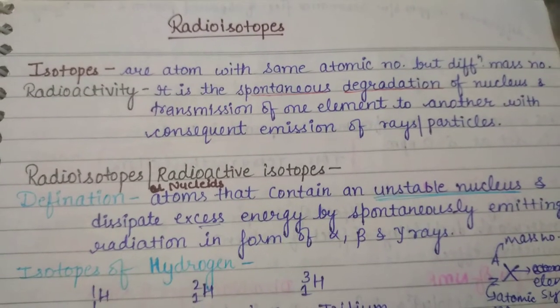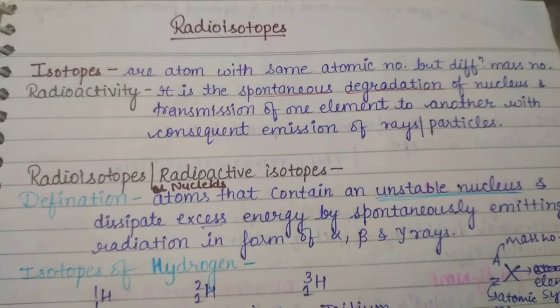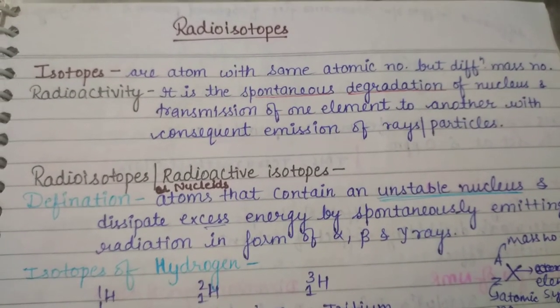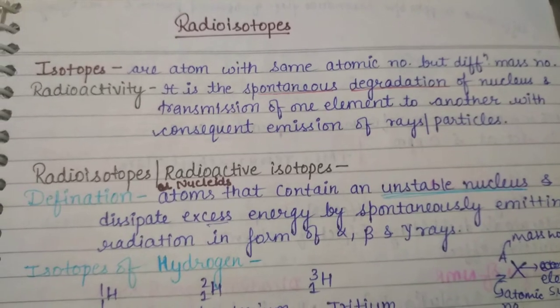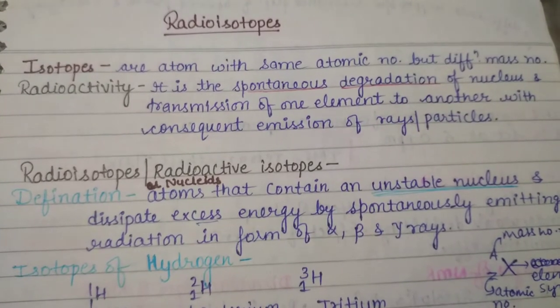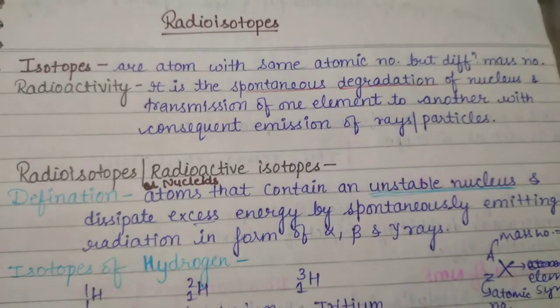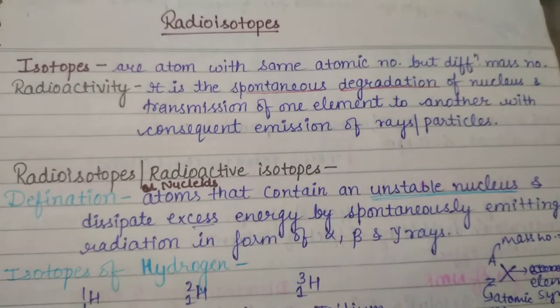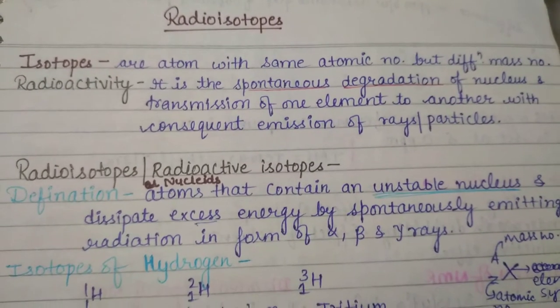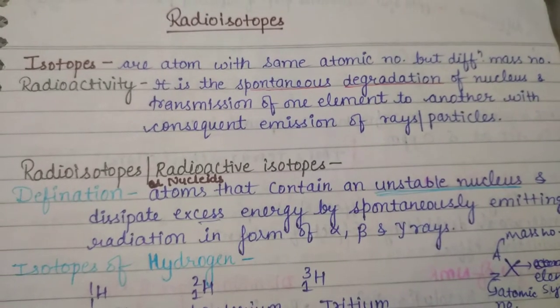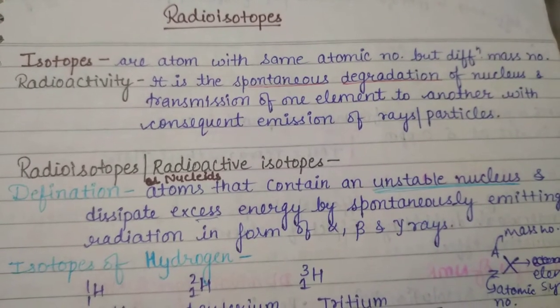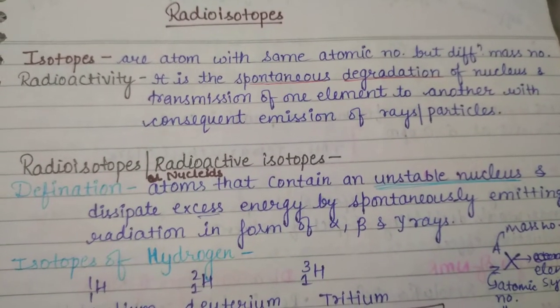Hello everyone, welcome to YB Biology Classes. Our today's topic is Radioisotopes. Isotopes are atoms with the same atomic number but different mass number. We have studied this in 11th and 12th classes — this is basic.